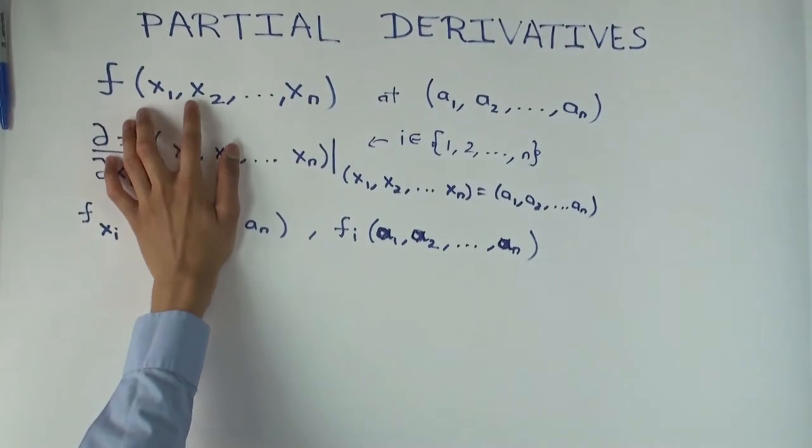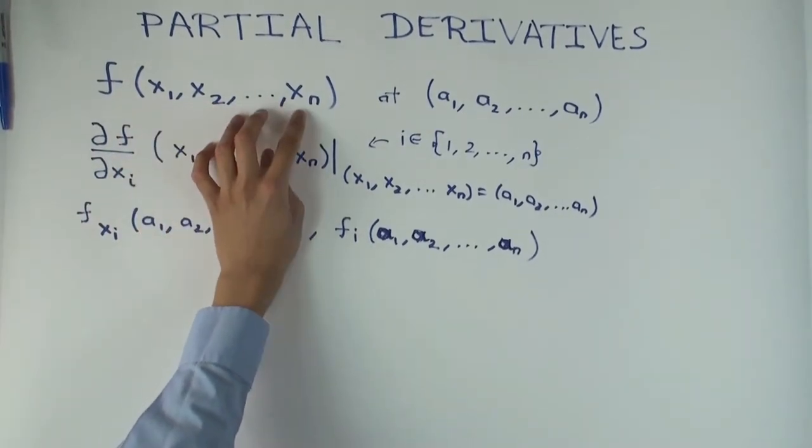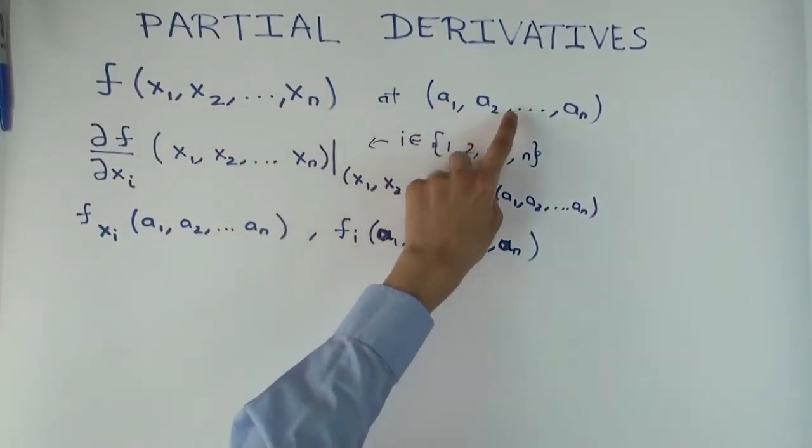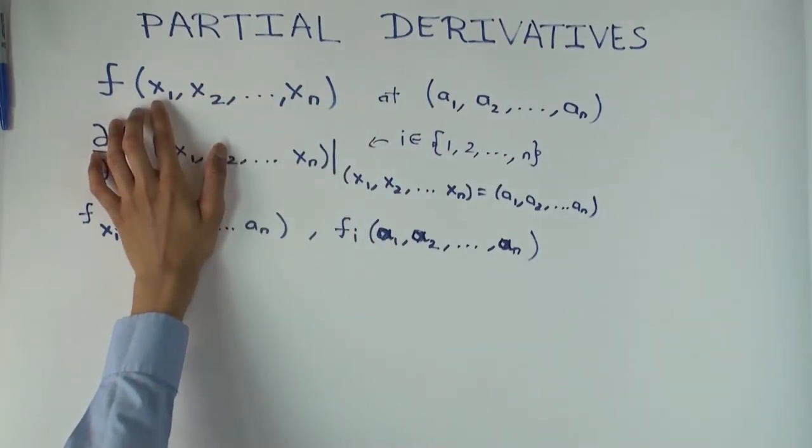Okay, now the variables I'm going to denote as x1, x2, so on until xn, and the point is going to be a1, a2, an. So let me just clarify a little what this notation means.